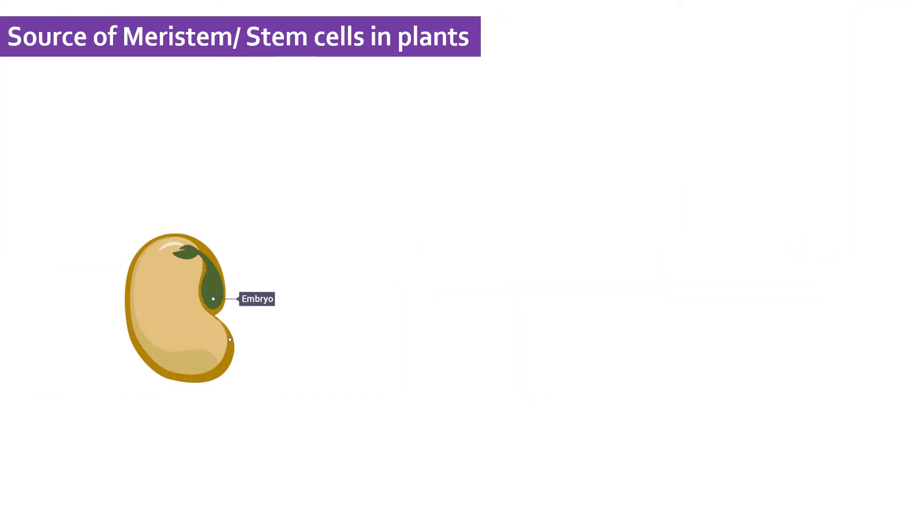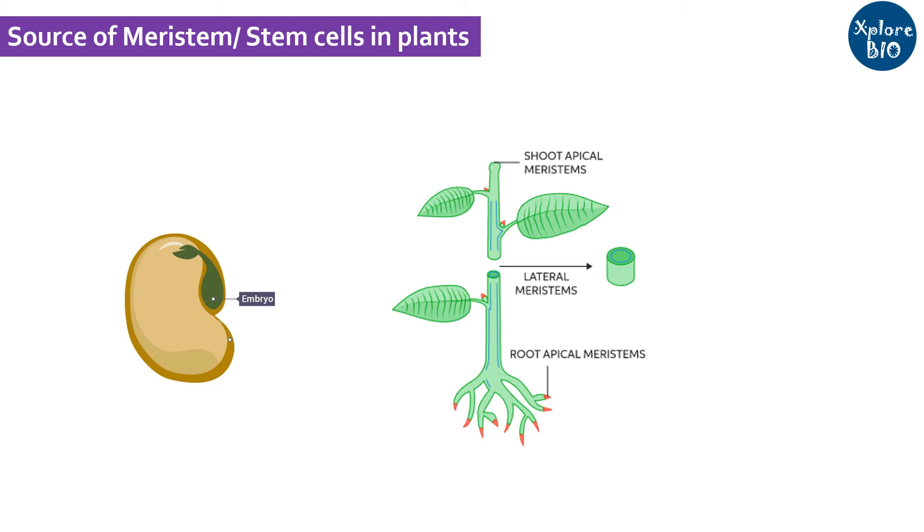In plants, embryo, shoot tip, root tip and nodes are the major reservoir of these types of stem cells. But other meristems to some extent are differentiated. For example, a shoot apical meristem will form only shoot but not root. Likewise, root apical meristem can form root but not leaf, flower or any such organs.